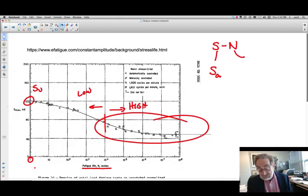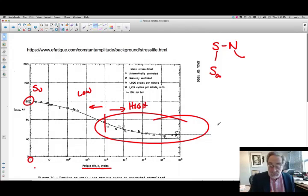And so you can see a lot of steels have this plateau and we call that the endurance limit. So the endurance limit here would be about 48 ksi.